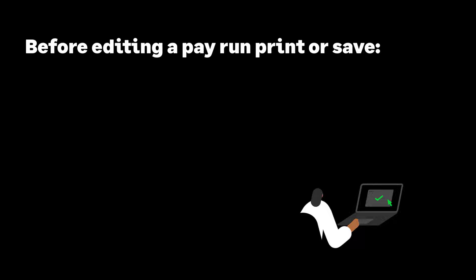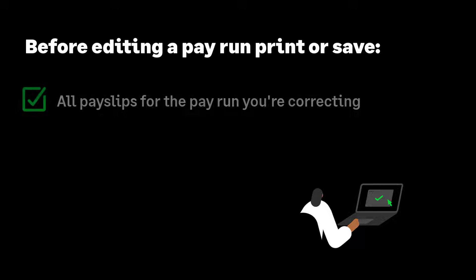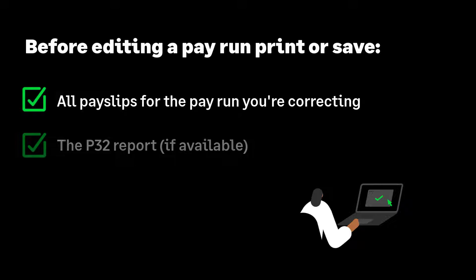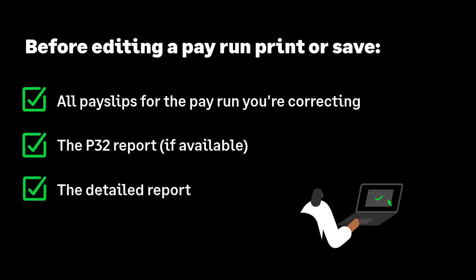We'd recommend you save all payslips for the period you're correcting. If a P32 is available, we recommend you print or save this report, as well as the detailed report. If you would like to run extra reports before making amendments, more reports can be found in the reporting menu.